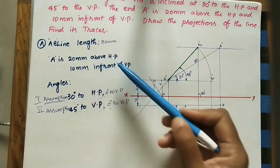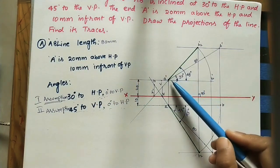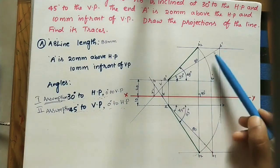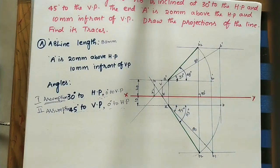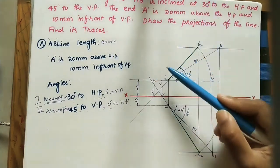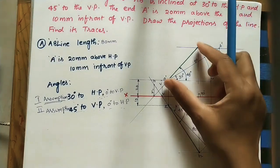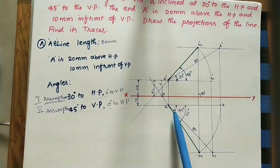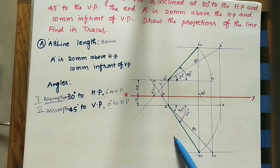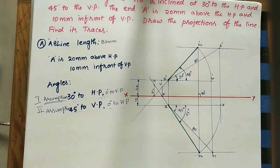Mark all given dimensions: point A is 20 mm above HP and 10 mm in front of VP; line AB makes 30 degrees with HP and 45 degrees with VP; total length is 80 mm. Also mark the final front view angle (48°) and length (56 mm), and the final top view length (68 mm) with a dimensional line. This completes the projections and traces. Please like, subscribe, and share.